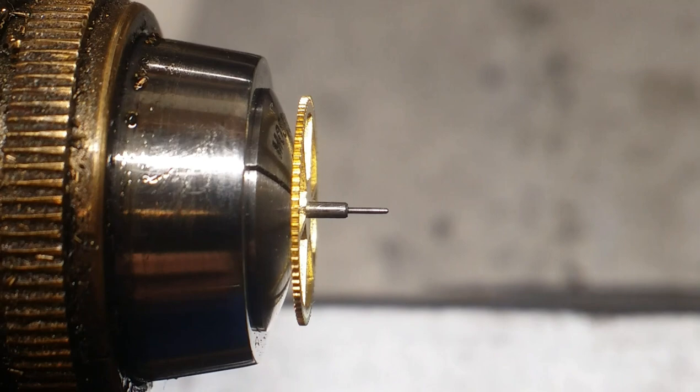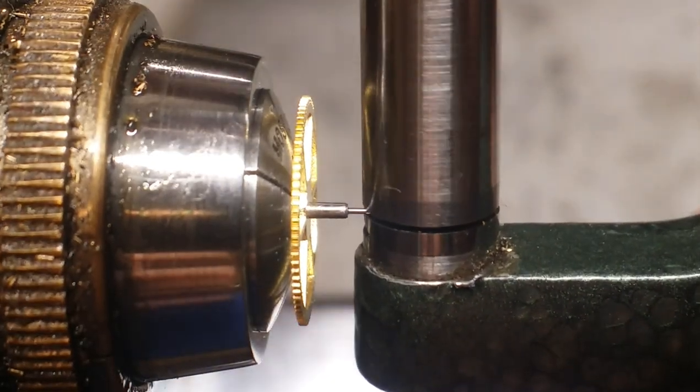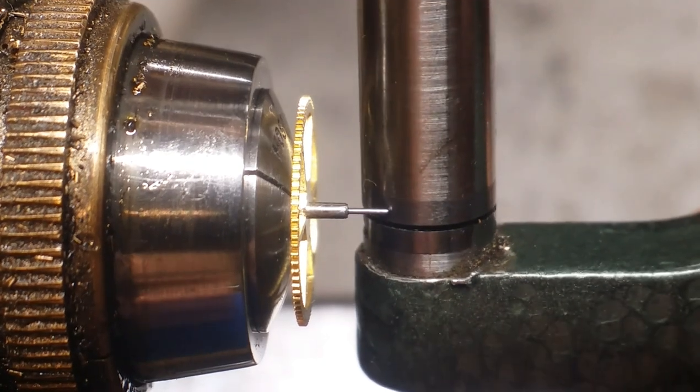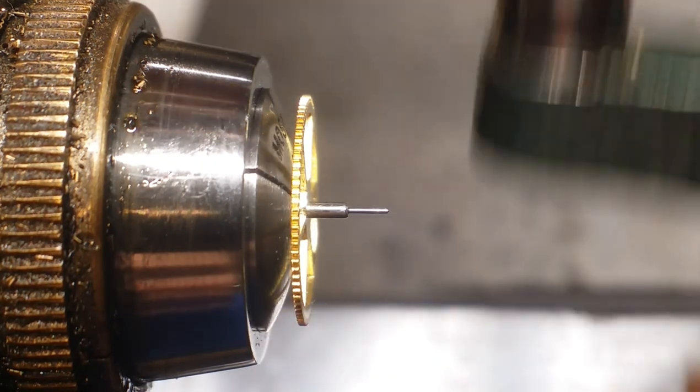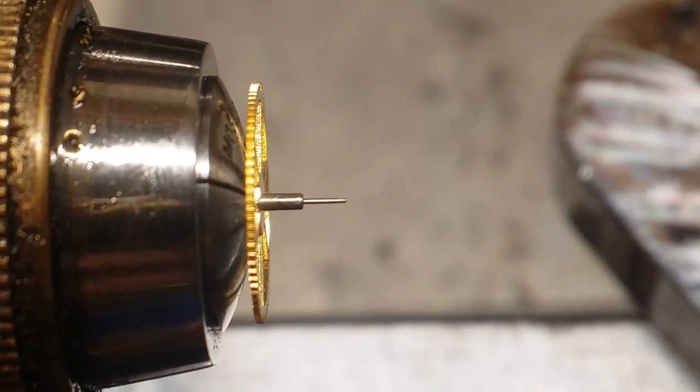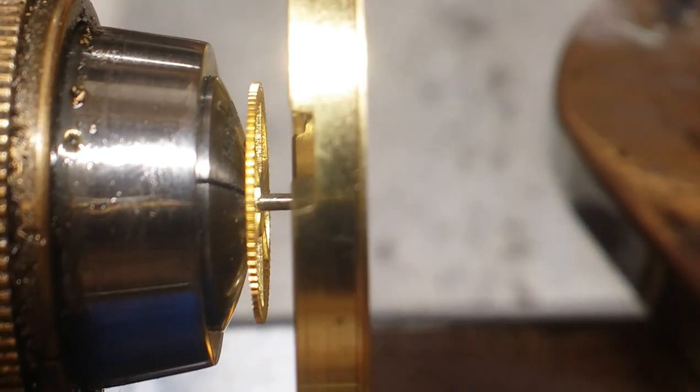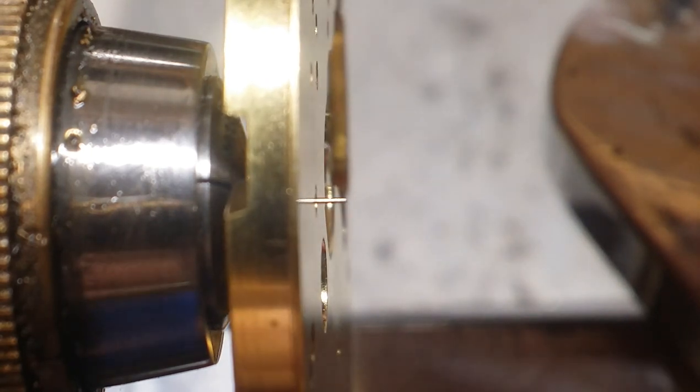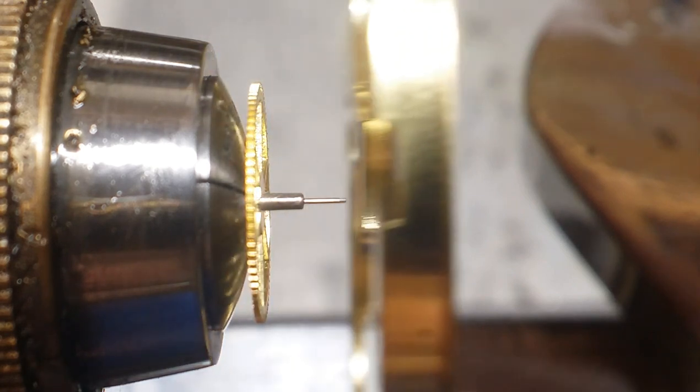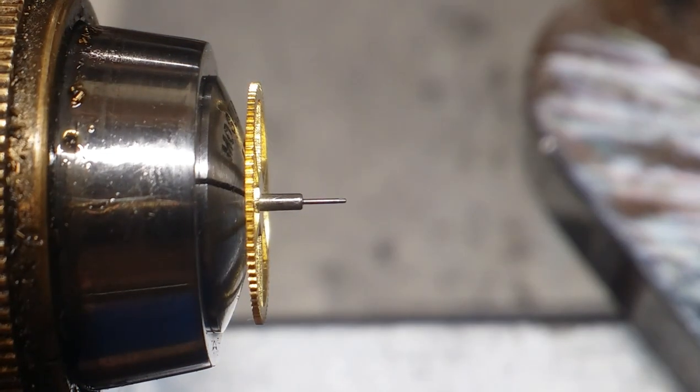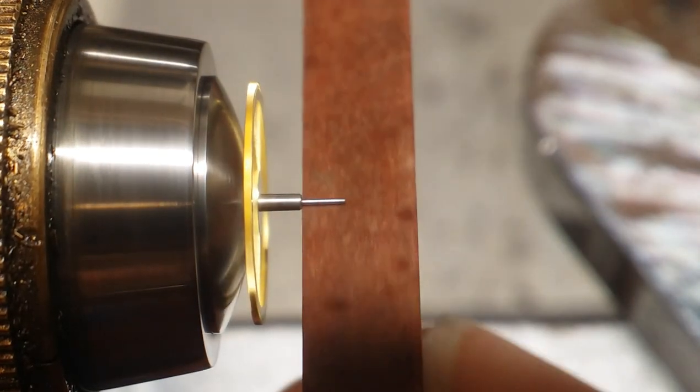But ultimately, as you get close to it, you discard or you put aside the micrometer and you start test fitting it. And ultimately, you fit the pivot to the jewel, regardless of whatever the diameter is.